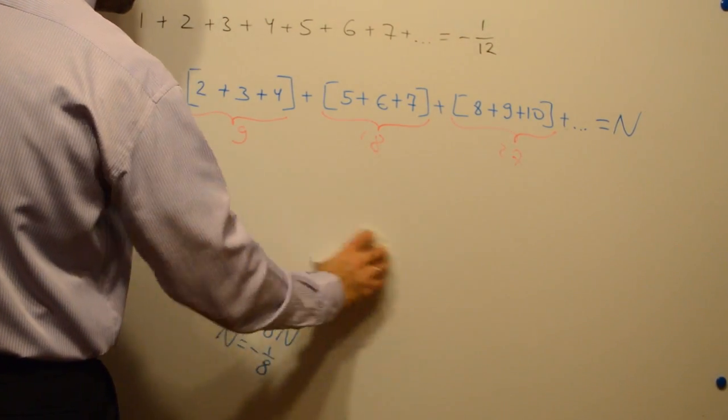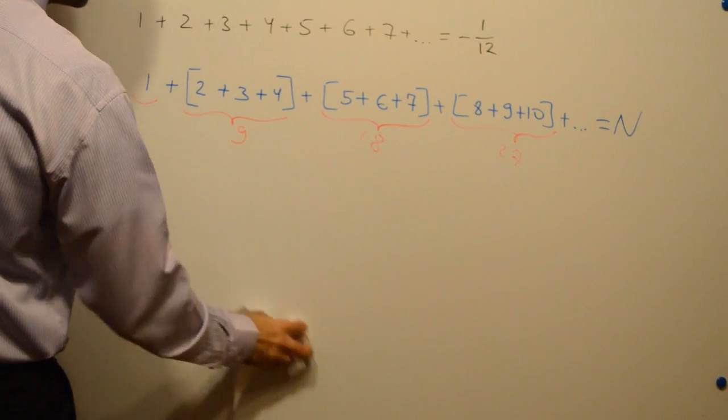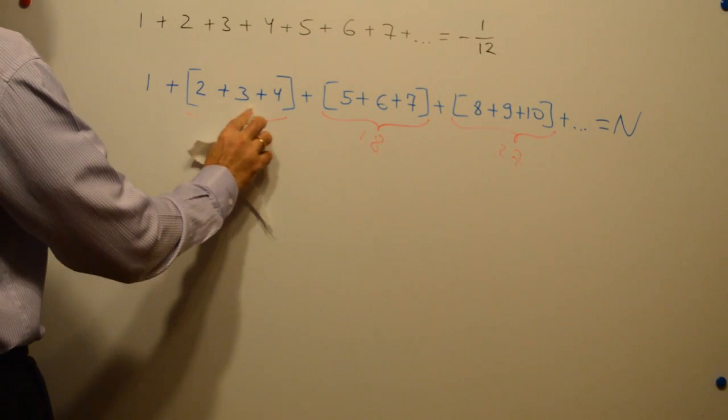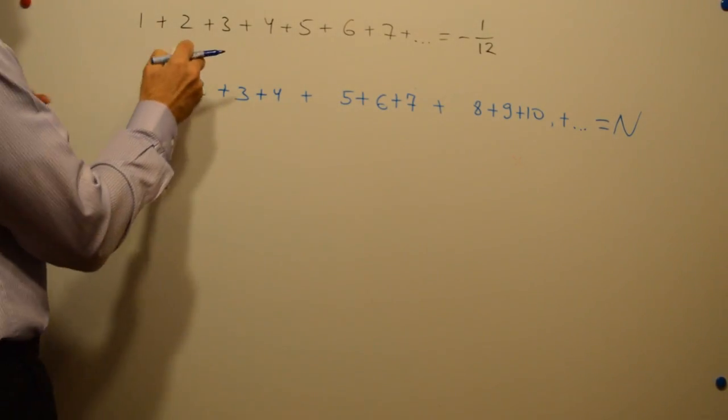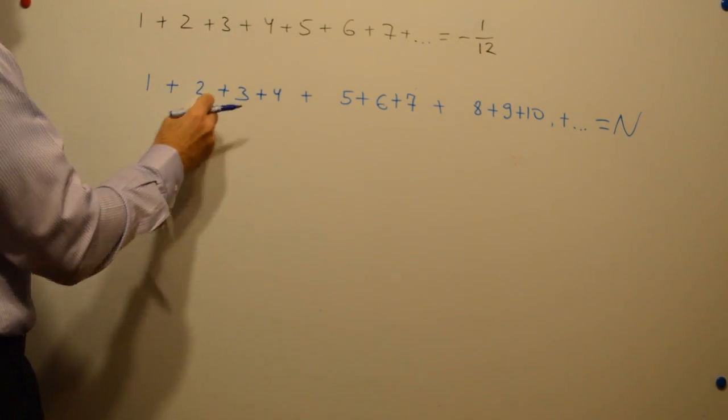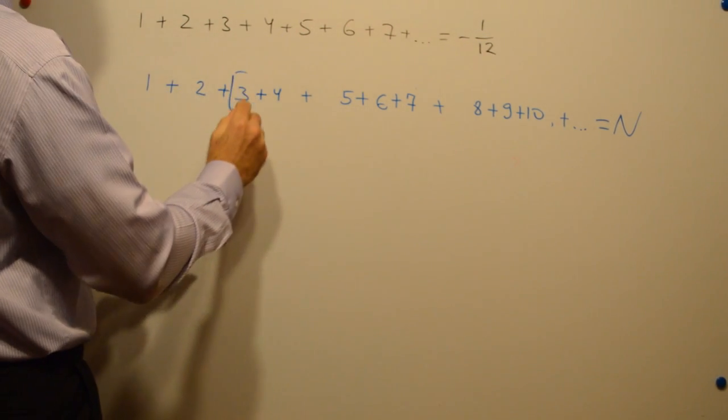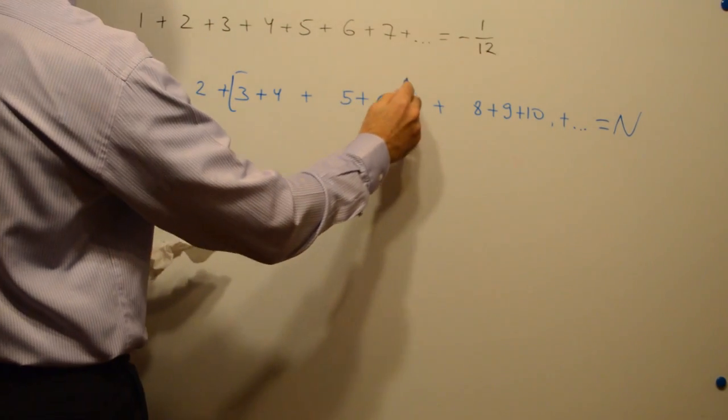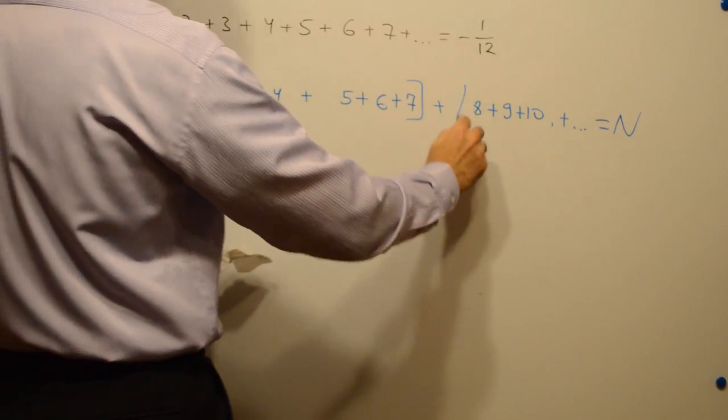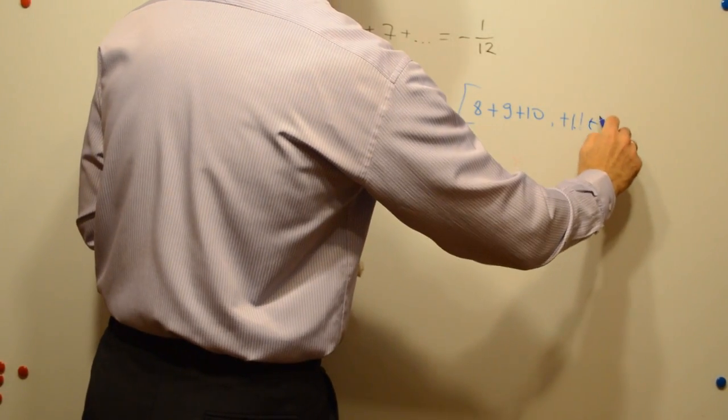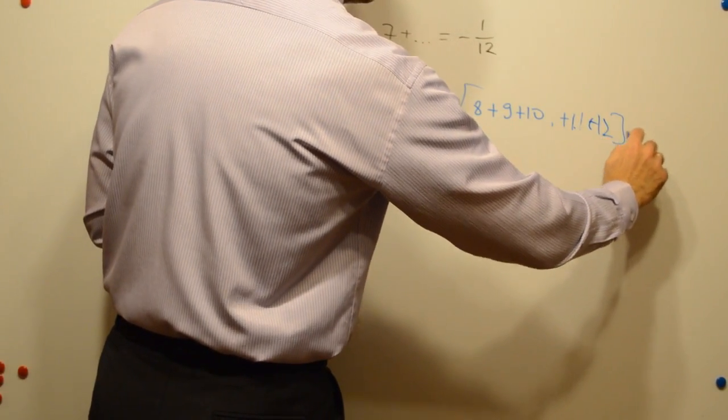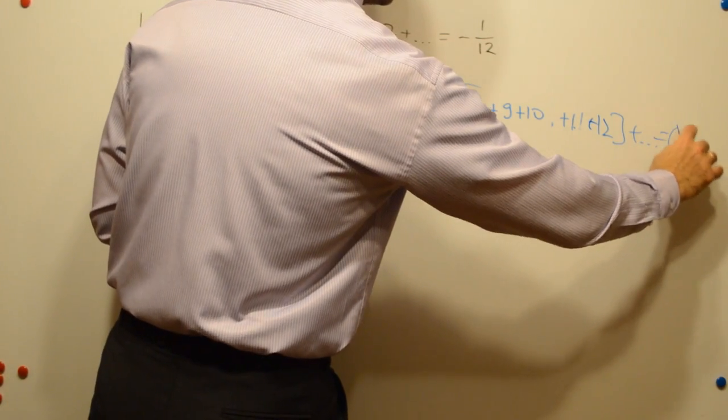If we group numbers in groups of 5 leaving alone 1 and 2. Let's start here 3, 4, 5, 6, 7 and 8, 9, 10, 11 plus 12 plus etc equals m.